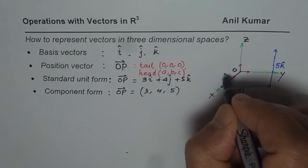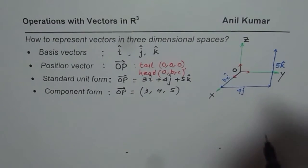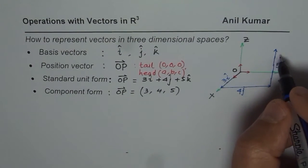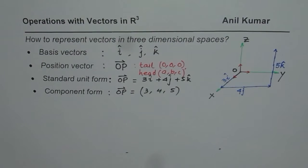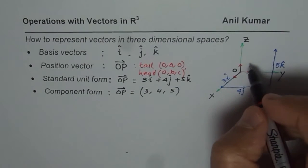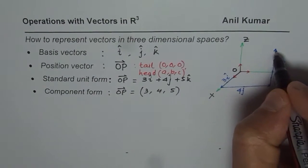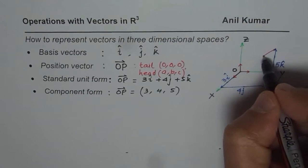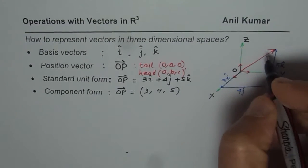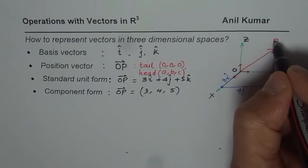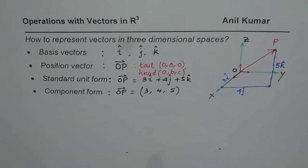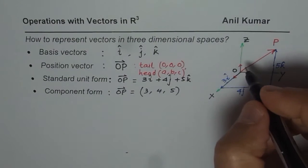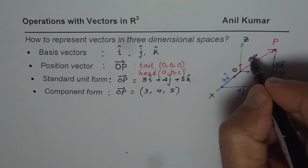I may or may not write this because it becomes very tedious while explaining. So that position represents OP. If I have to join with tail on the origin and head there, this vector represents OP.